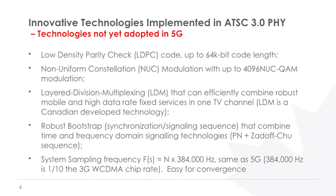The second one is called non-uniform constellation modulation, up to 4K QAM. With 5G, they're up to 1K. There's also so-called layer division multiplexing — new technology not yet implemented in 5G. And there's also bootstrap, which integrates the time and frequency technology developed by One Media. Also, probably nobody knows, but 3.0 and 5G and 4G share a common clock, so they can be easily integrated together.